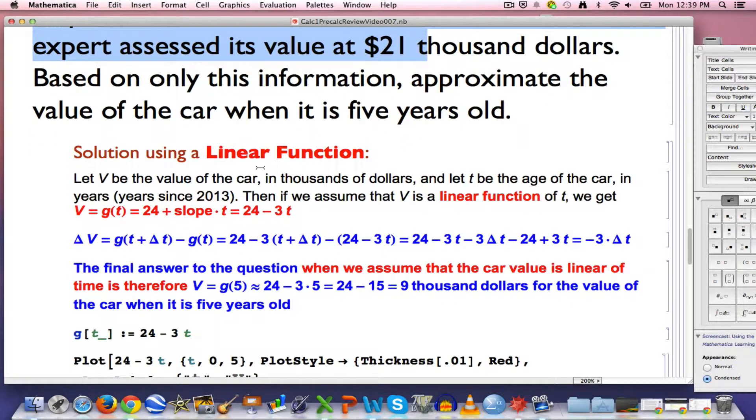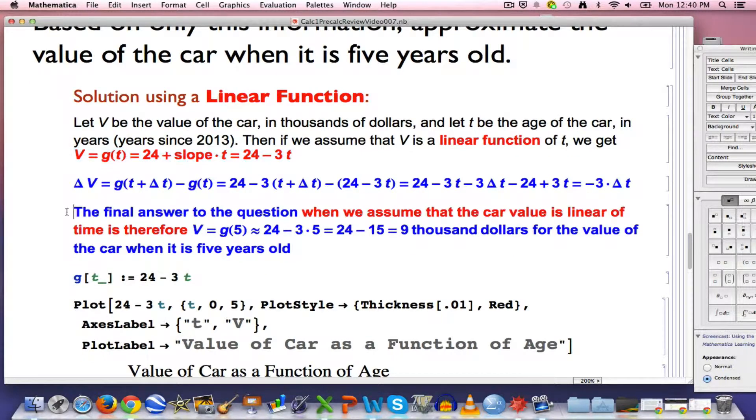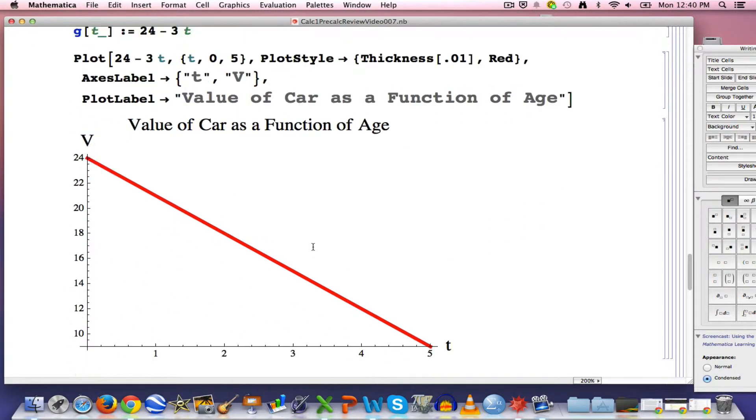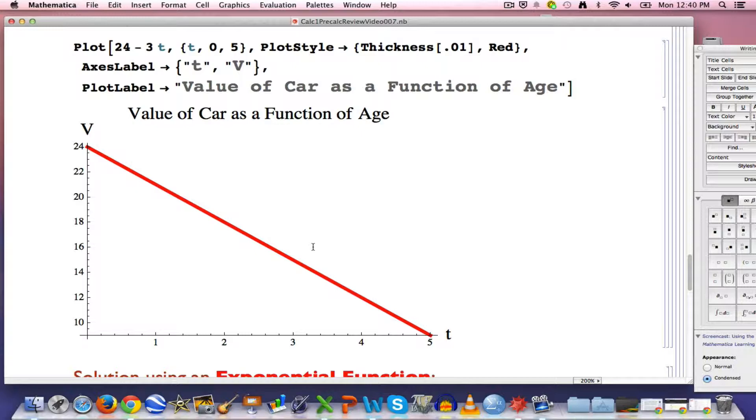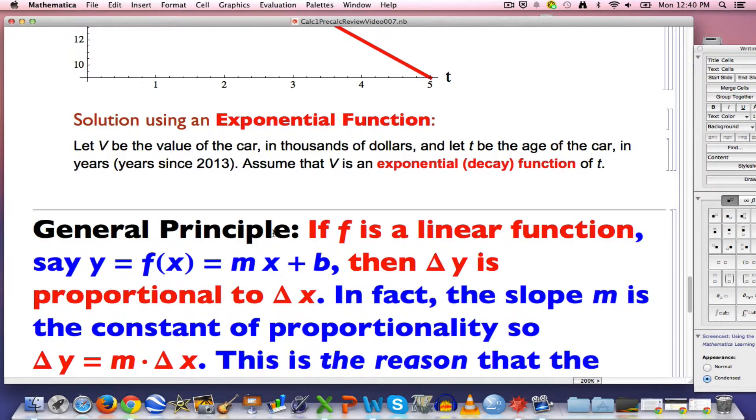Here was the solution that we got with the linear function. If we assumed v was a linear function of t, we got this equation: v was 24 minus 3t, where the value v is in thousands of dollars and t is time since the year 2013. And for the final answer, when we assume the car value is a linear function of time, g of 5, 5 years old, is about $9,000. Is that reality? It's hard to say, but that would be an approximation if we assumed a linear function. Now we want to come up with a solution using an exponential function.